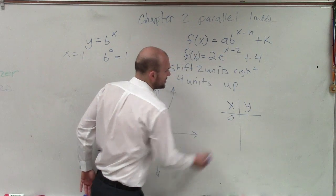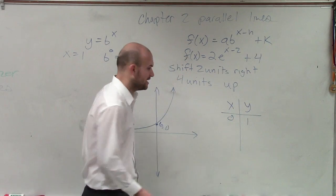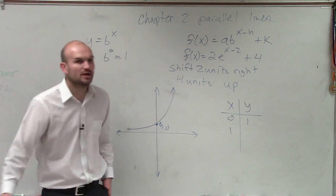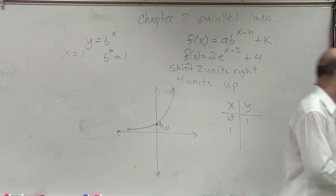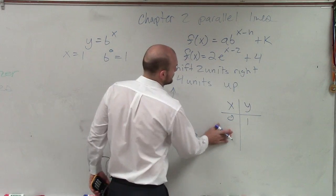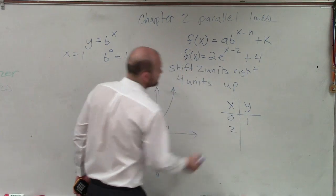But then a lot of times, we can also just choose a point and just pick another value for x. So we said when x equals 0, got that. We know that answer is 1. But then maybe try to find another point that you can just have an understanding to make sure the graph is going correct. So let's do 2.